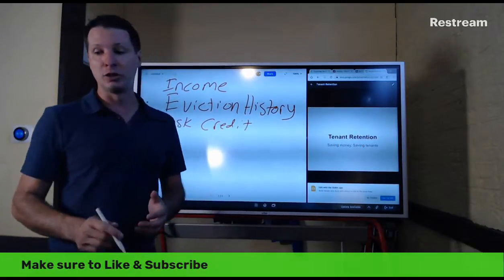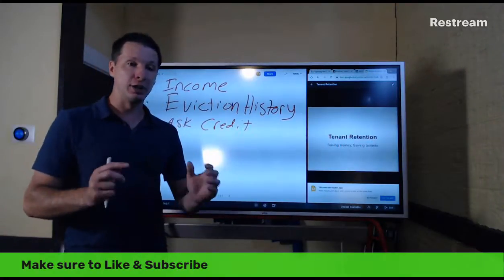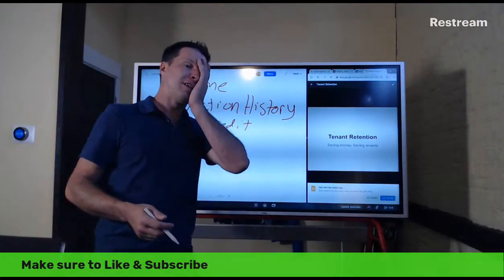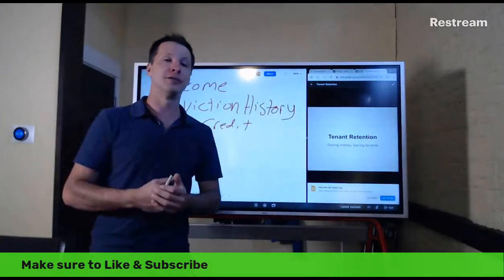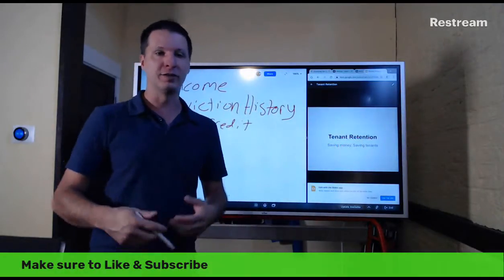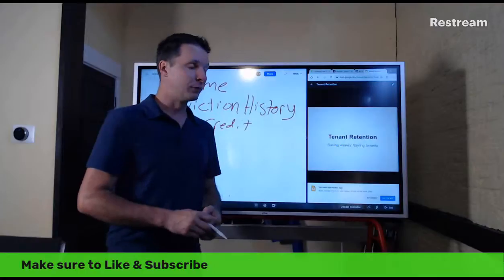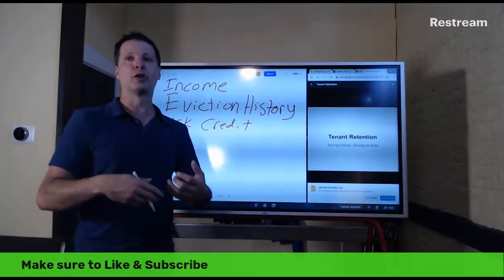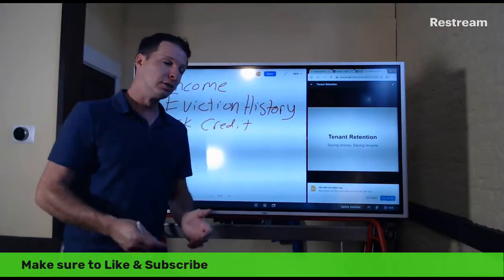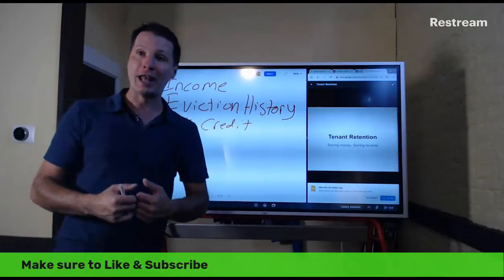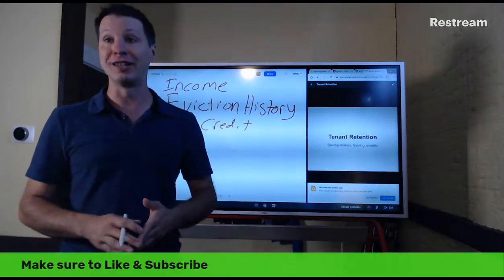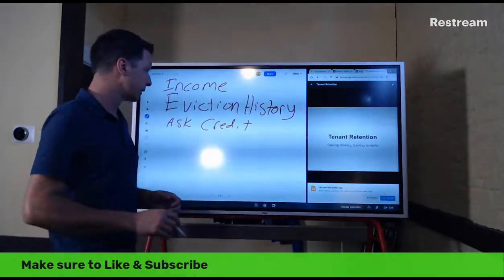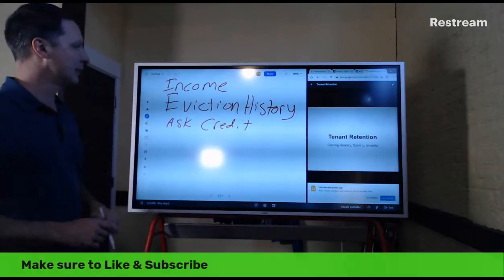We used to have a huge concern about taking too long to fill an apartment, so we'd rush to put someone in who kind of qualified. But it's way more expensive to deal with a bad tenant than to have one or two extra months of vacancy. We learned that the hard way. Income, eviction history, and credit — those are your screening pillars. After that, agree to set up a showing.